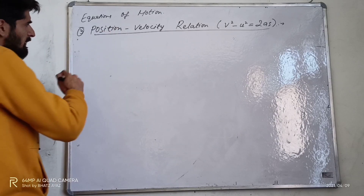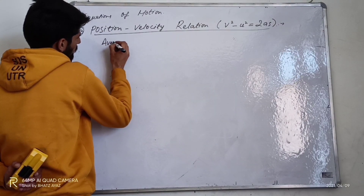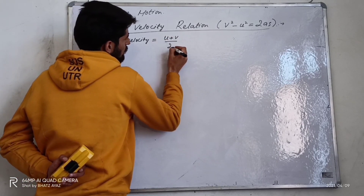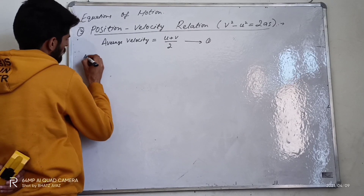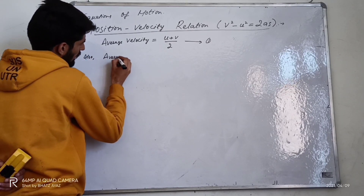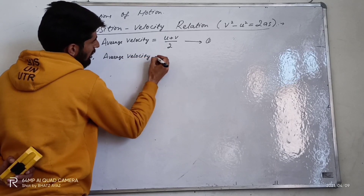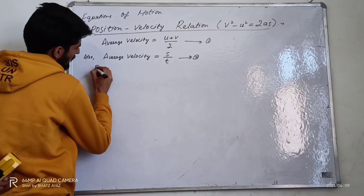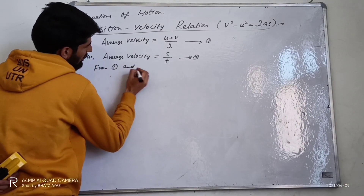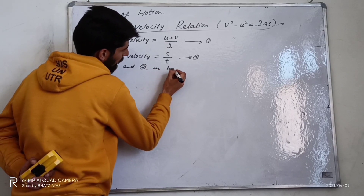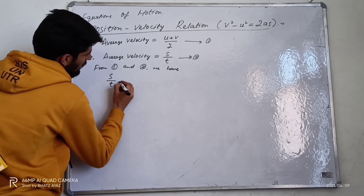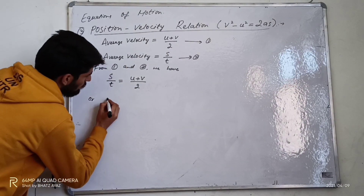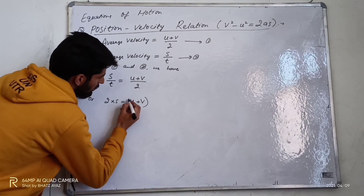We have to derive this equation. We know that average velocity is equal to u plus v divided by 2 — let this be the first equation. Also, average velocity is equal to s divided by t — let this be the second equation. From the first and second equations: s divided by t is equal to u plus v divided by 2, and cross-multiplying gives 2s is equal to u plus v into t.